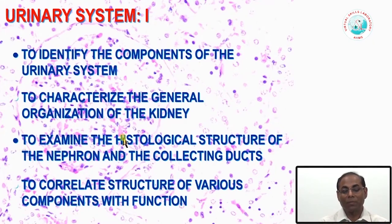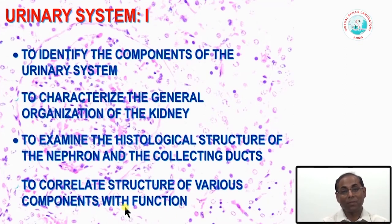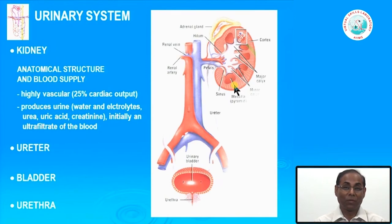Examining the histological structure of the nephron and collecting ducts is very important because kidney diseases may involve only the glomerular system—glomerulitis—or only the tubular system. The pathobiology and disease process will be very different, so we must know the structural issues related to pathological dysfunction. This will lead to our structure and function correlation. The kidney is a very vascular organ because it takes almost one-fourth of the total cardiac output for filtration.